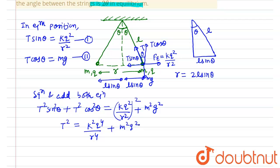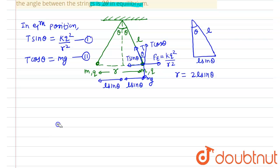So divide equation 1 and 2. T sin θ by T cos θ will be equals to tan θ. Tan θ equals kq² upon mgr².